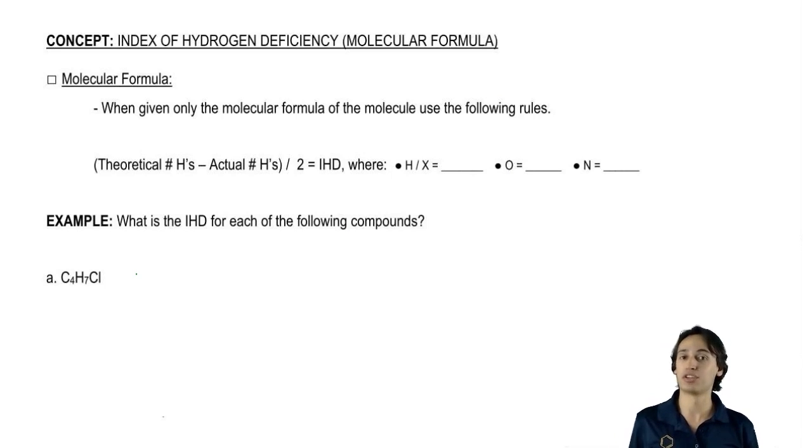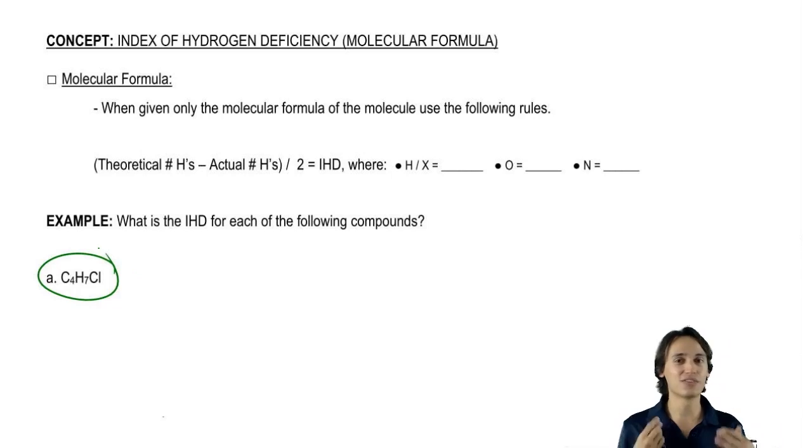But when you're just given a molecular formula, let's say like this example, C4 H7 Cl, I have no clue if there's rings there, if there's double bonds there. All I have is the atoms.